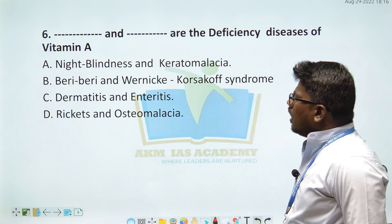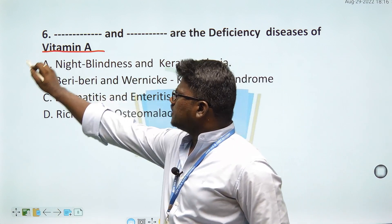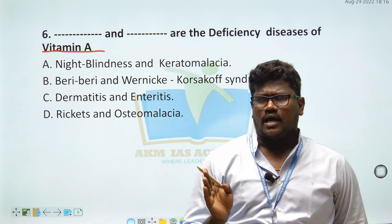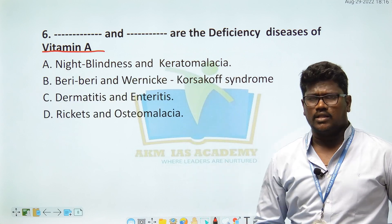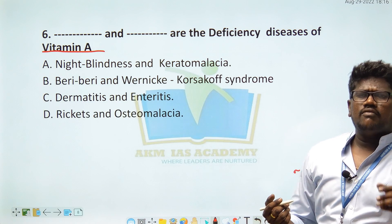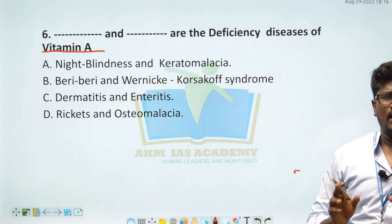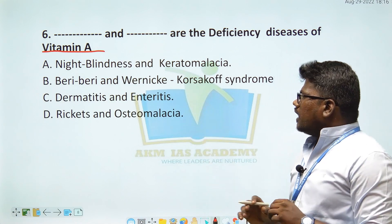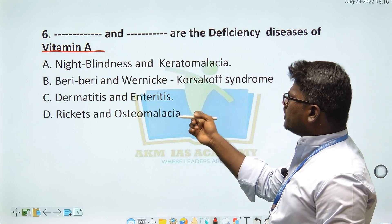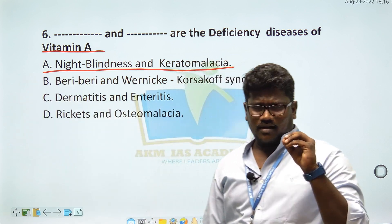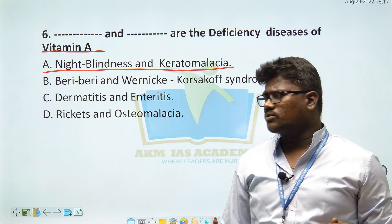Next question: Dash and dash are the deficiency diseases of vitamin A. The correct answer is night blindness and keratomalacia. Vitamin A deficiency leads to night blindness and keratomalacia. Sources of vitamin A include papaya and golden rice.